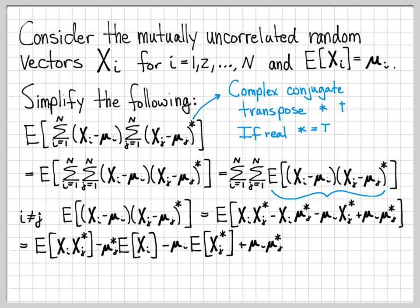So that's what we end up with. And now we can use the fact that we have mutually uncorrelated random vectors. This, by definition, is equal to this because Xi and Xj are mutually uncorrelated. And that's the definition of uncorrelated. The expectation of the product is just the product of expectations. So because of that, this first term is really just the expected value of Xi, which is mu_i, times the expected value of Xj star, which is mu_j star.